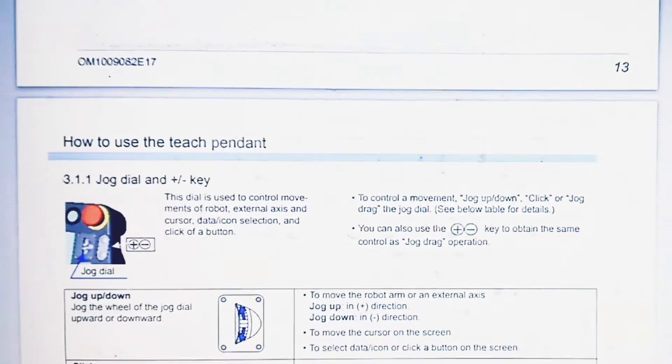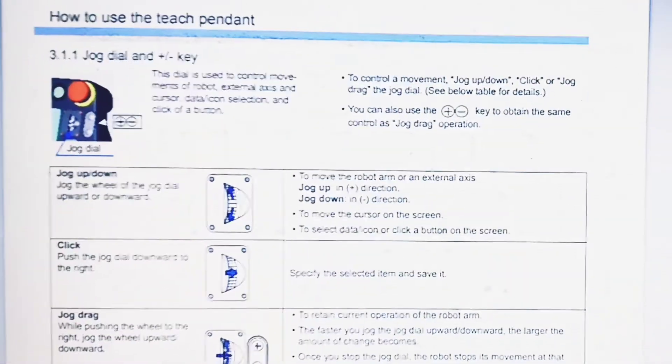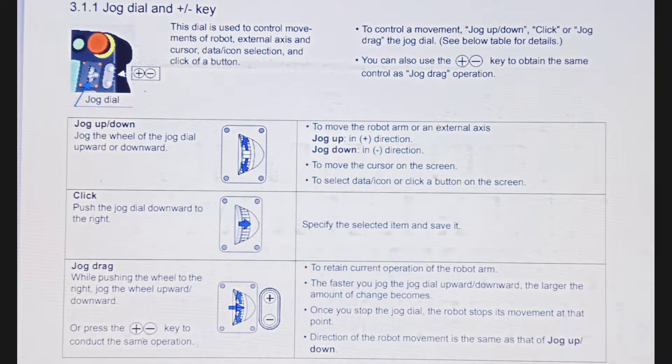Here we discuss the jog dial and plus/minus key. This dial is used to control movements of the robot, external axis, and cursor data icon selection and click of a button.